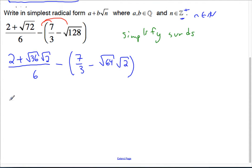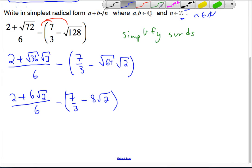At this point, let's tidy it up. 2 plus square root of 36 is 6 root 2, divided by 6, subtract 7 over 3 inside of brackets, minus 8 root 2.